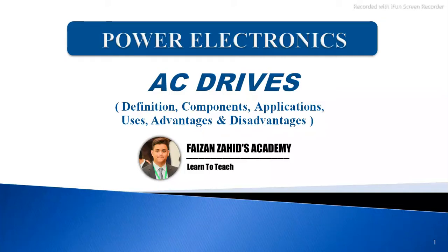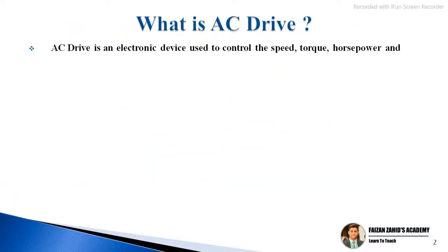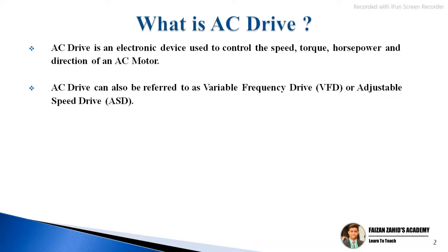What is an AC drive? An AC drive is an electronic device used to control the speed, torque, horsepower, and direction of an AC motor. These are the devices which we use to control the speed, torque, horsepower, and direction of an AC motor.